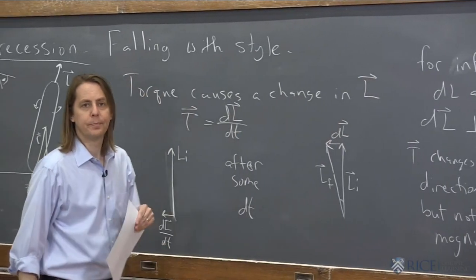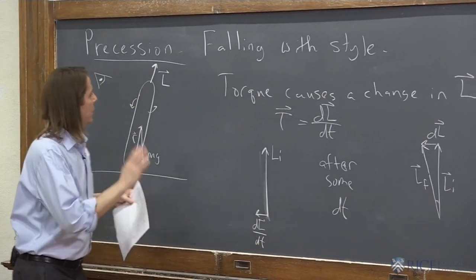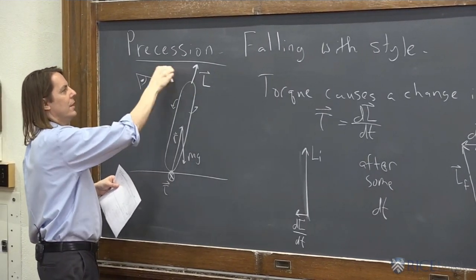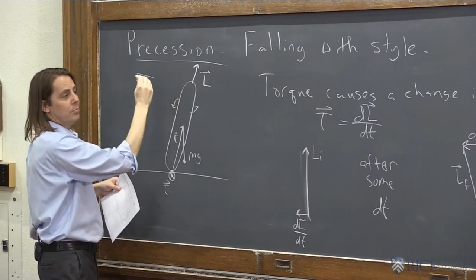All it does is turn it. So that's what causes this thing to go around in a circle. The L points this way, and it kind of goes around like this. And that's what precession is.